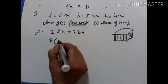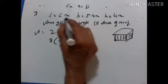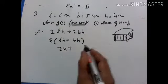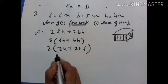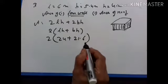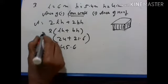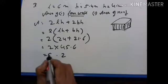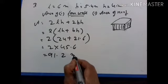Area of 4 walls equals 2 into (L × H + B × H). L into H: 6 into 4 is equal to 24. B into H: gives 21.6. So 2 into (24 plus 21.6) equals 2 into 45.6, which equals 91.2 meter square. That is the area of the 4 walls.